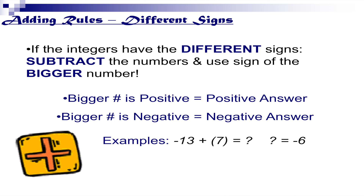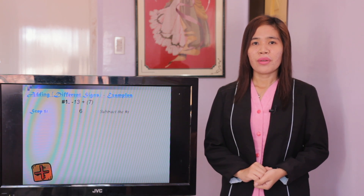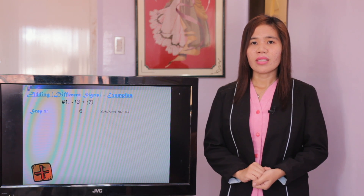Examples: negative 13 plus positive 7 equals negative 6. Positive 23 plus negative 8 equals positive 15. Here is the process for example number 1: negative 13 plus positive 7. Step 1, subtract the numbers — 13 minus 7 equals 6. Step 2, use the sign of the bigger number. The bigger number is negative, so the answer is negative 6.